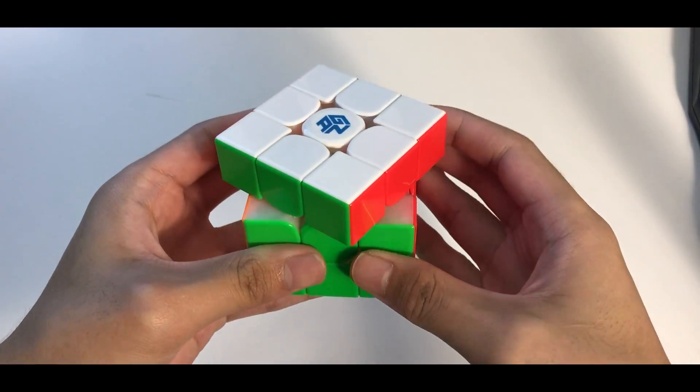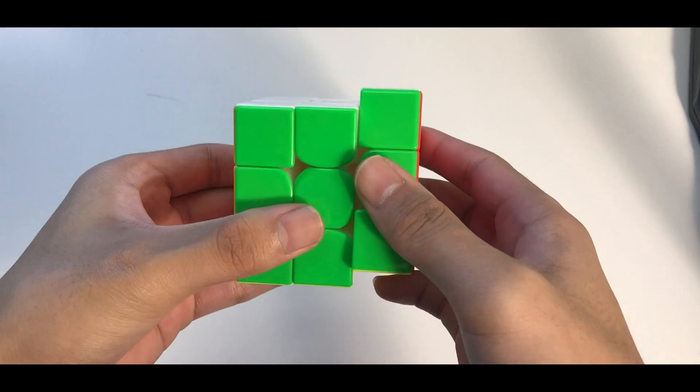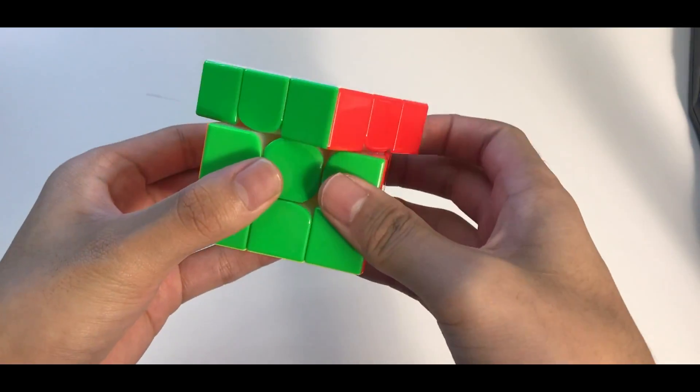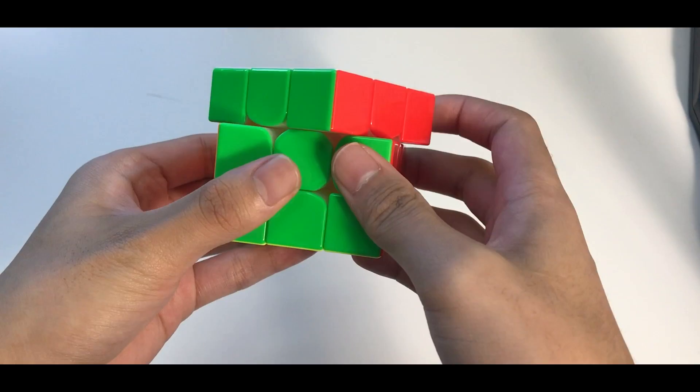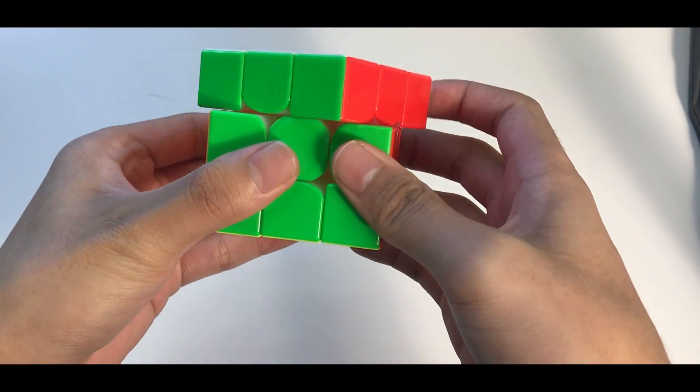For corner cutting, you have nothing to worry about since this cube cuts almost anywhere. And that's something you expect from a GAN cube. For me, I personally prefer stable cubes so there's less corner cutting and it's more on stability.